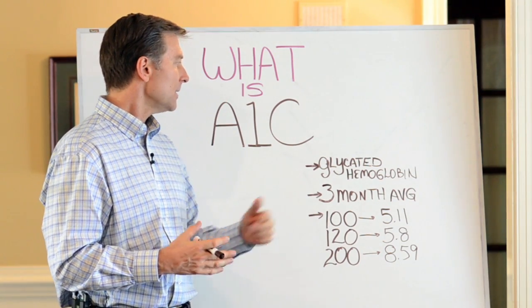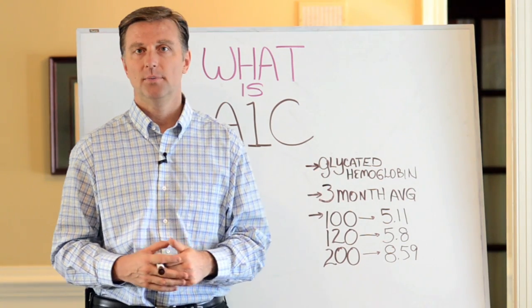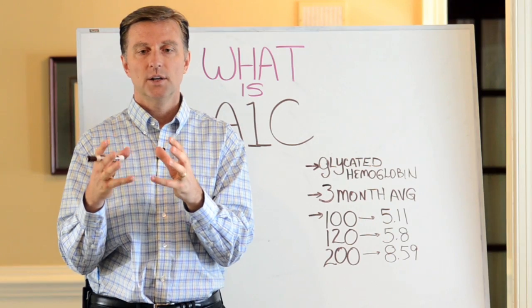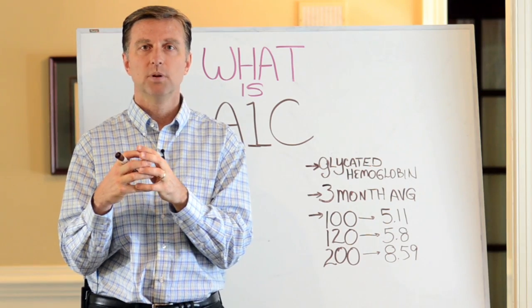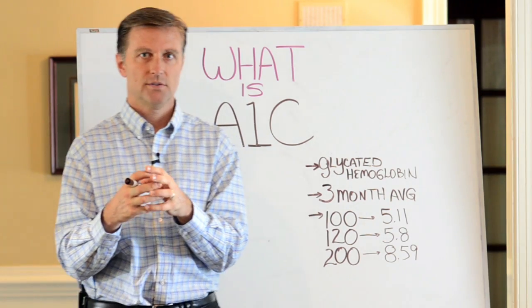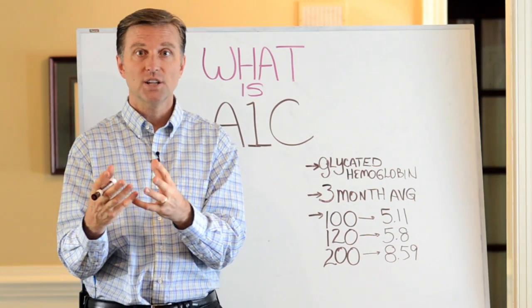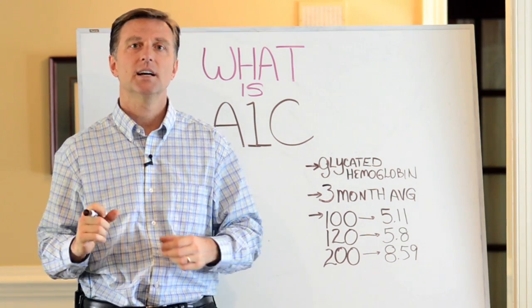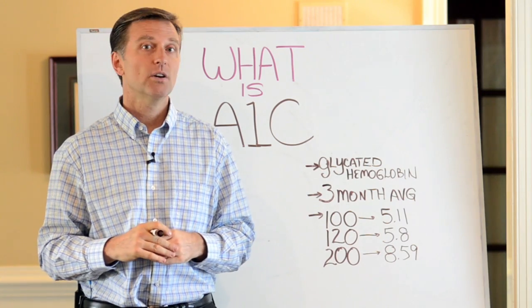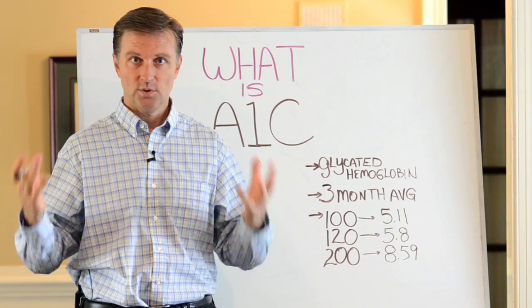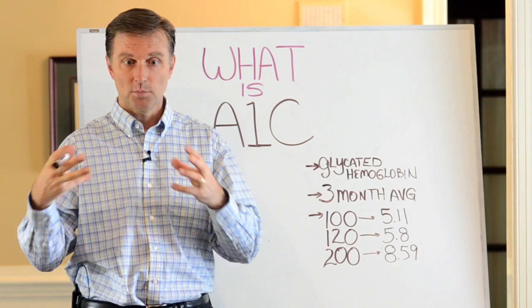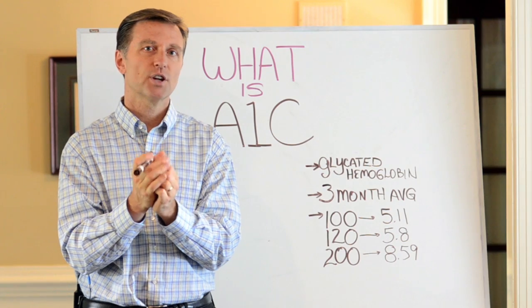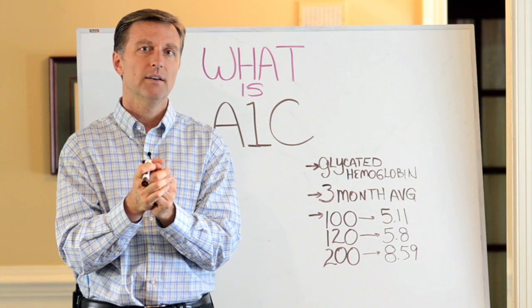It basically means glycated hemoglobin. That's a fancy word for sugar-coated blood cells. There's protein in your blood and it's sugar-coated, much like a sugar-coated cereal that you would eat. Your blood has sugar on the cells and they're measuring how much sugar is on there.